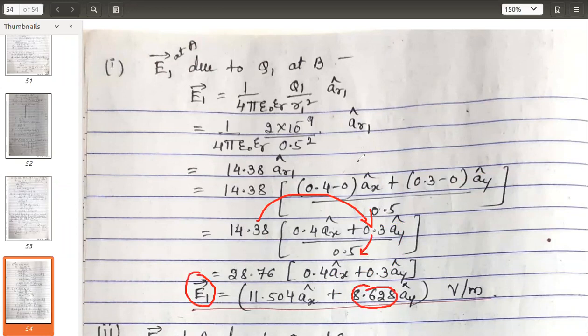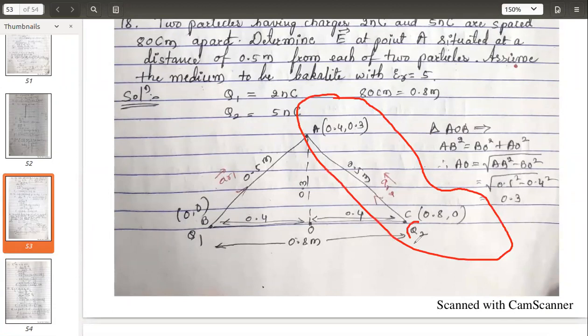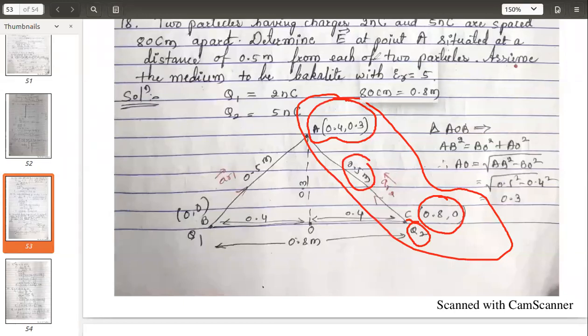So this is about E1. Similarly, we should go for E2 calculation. For E2, this figure should be considered, this part where charge q2 is there. q2 is placed at C. You know the coordinates of q2 as well as the coordinates of A. The distance is also specified, we can find it.